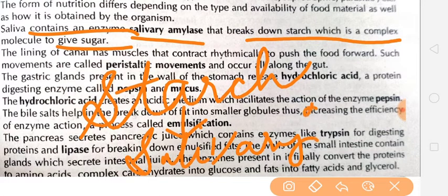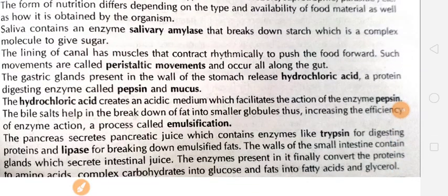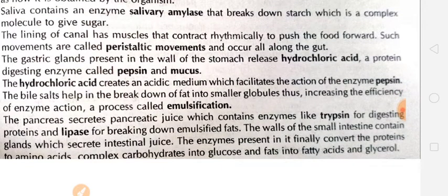Salivary amylase is an enzyme. As mentioned earlier about enzymes, they work to change complex food substances to simpler food substances. Salivary amylase works to break down starch into sugar. Next, the peristaltic movement: when you eat, the lining of the canal has muscles that contract rhythmically to push food forward. The food pipe or alimentary canal has a lining covering — food movement through it is called peristaltic movement.